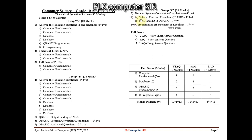Question 9 has parts a and b, both from Q Basic. Part a is modular programming — a combination of sub and function procedures: 1 question × 4 marks = 4 marks. Part b is file handling in Q Basic: 1 question × 4 marks = 4 marks.